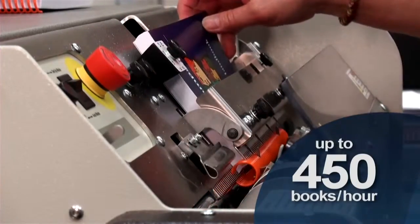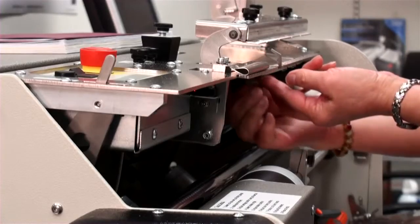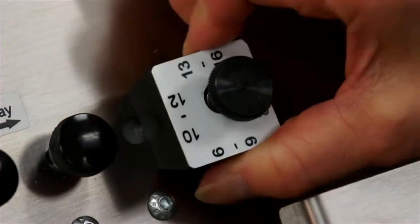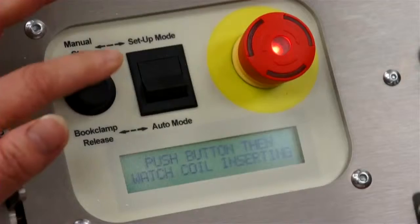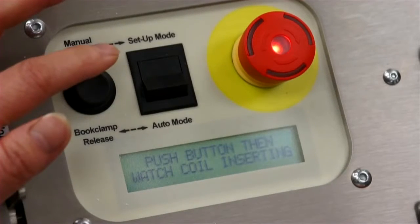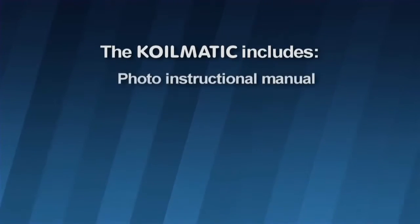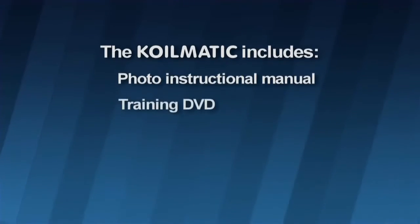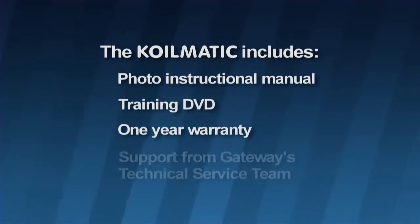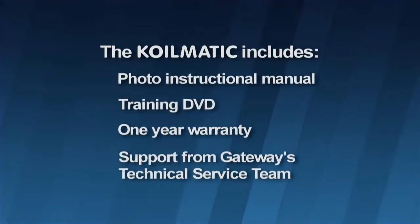The Coilmatic is easy to install and easy to operate with a low-maintenance design. Troubleshooting is easily handled by the machine's onboard electronic diagnostic system. The Coilmatic comes complete with a very easy to understand photo instruction manual and training DVD. The machine also has a one-year warranty, along with the support of Gateway's exceptional technical service team.